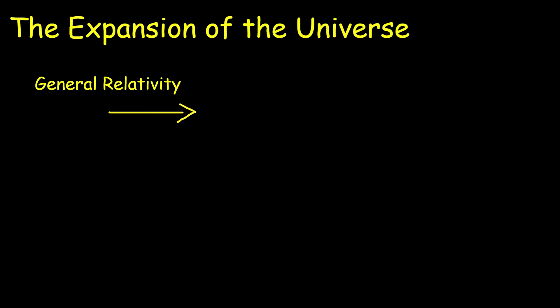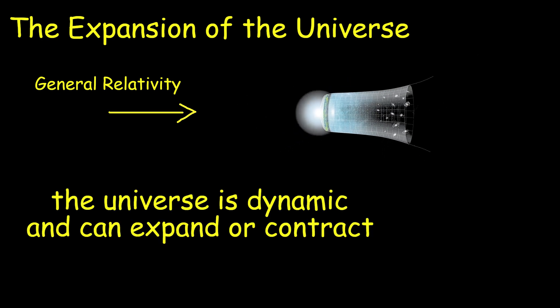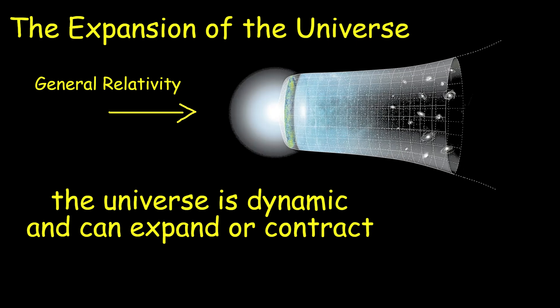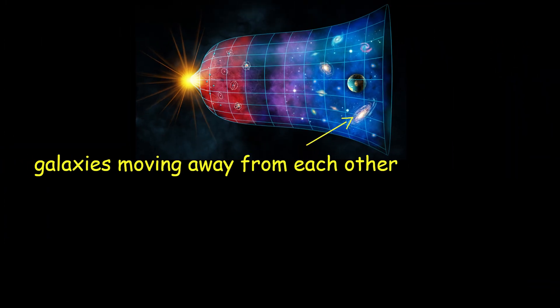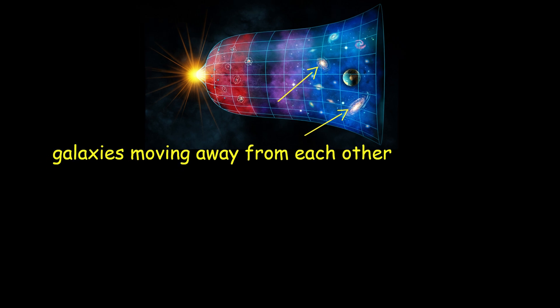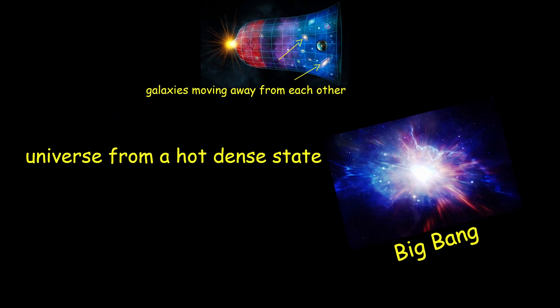General relativity also describes the large-scale structure of the universe. It predicts that the universe is dynamic and can expand or contract. Observations have shown that the universe is expanding, with galaxies moving away from each other. This led to the development of the Big Bang Theory, which describes the origin of the universe from a hot, dense state.